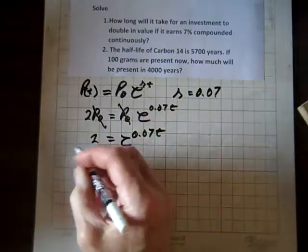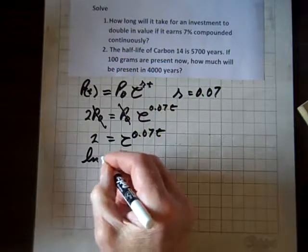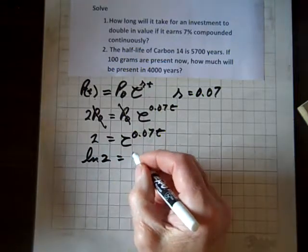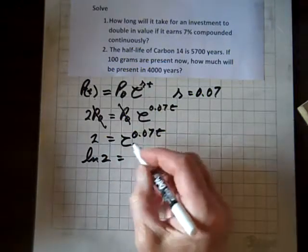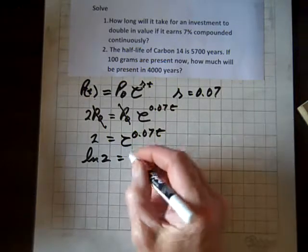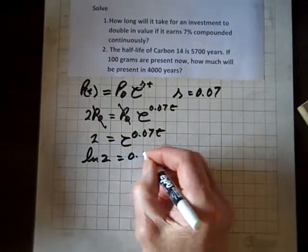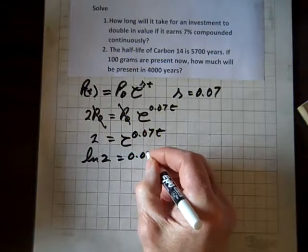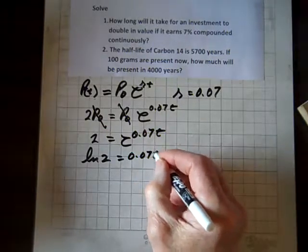Now we'll take the natural log of both sides. And when we take the natural log of this, what's on the right, we know by the law of logs we can remove what's in the exponent position and put it in coefficient position.